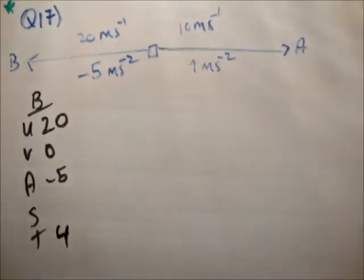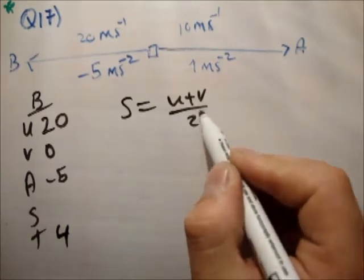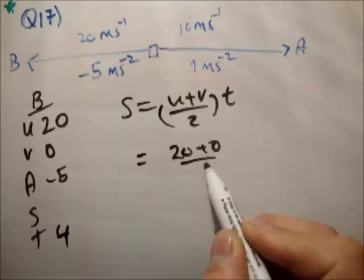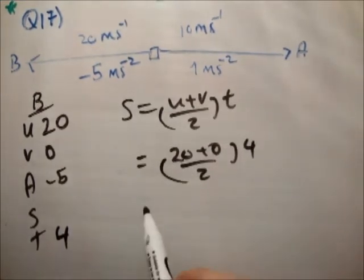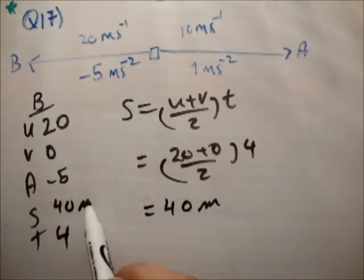Next, we'll do the distance. So S equals U plus V over 2 times T equals 20 plus 0 over 2 times 4. So that's 10 times 4 equals 40 meters. That's pretty straightforward.